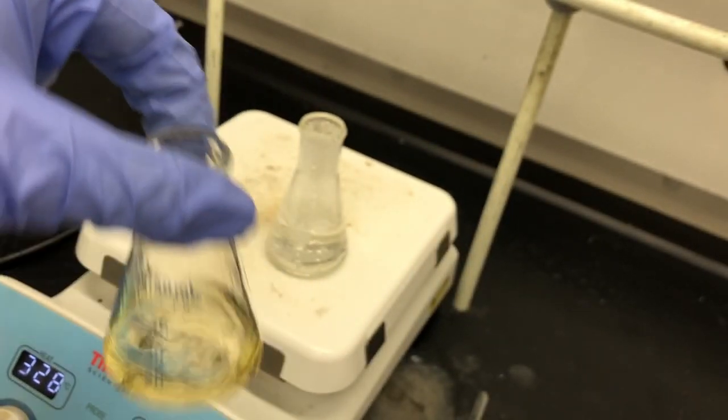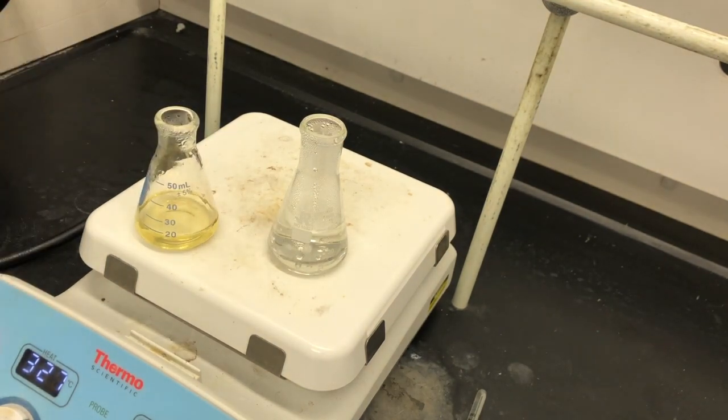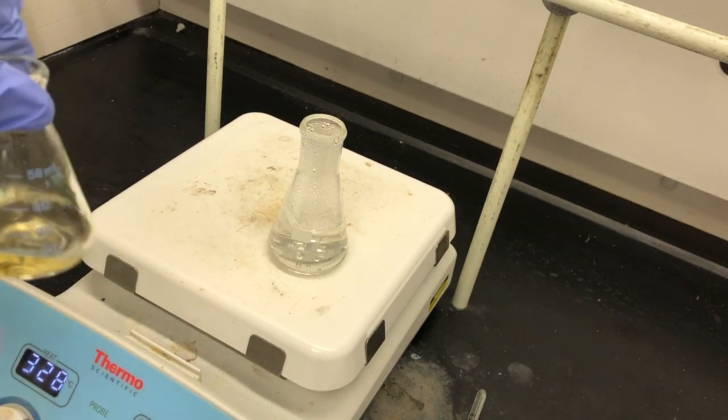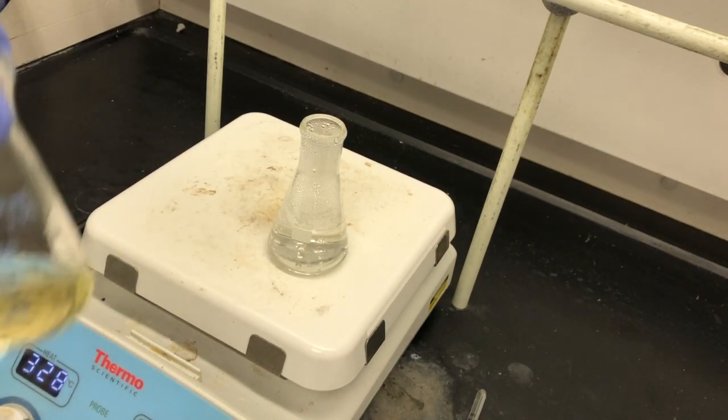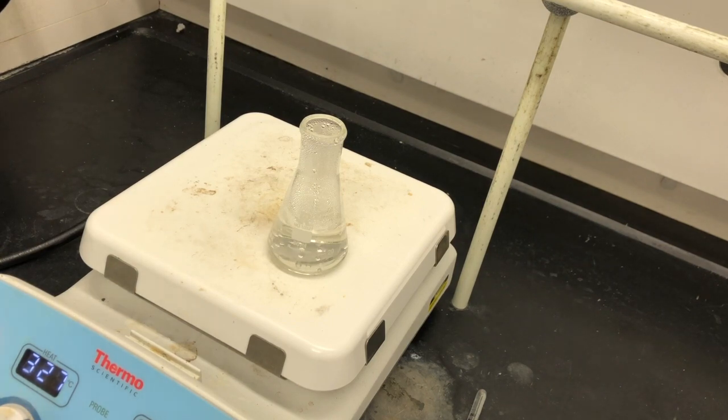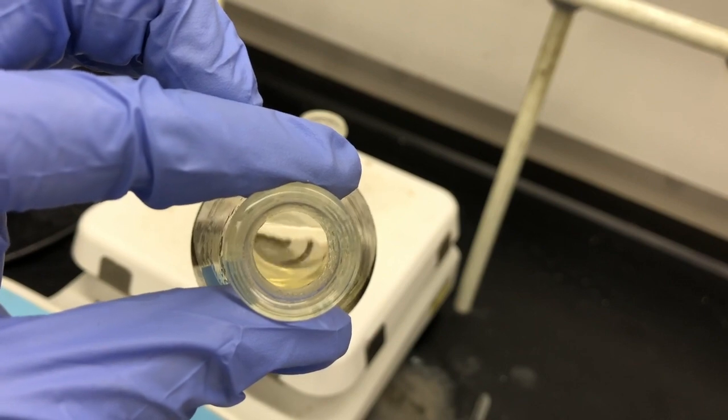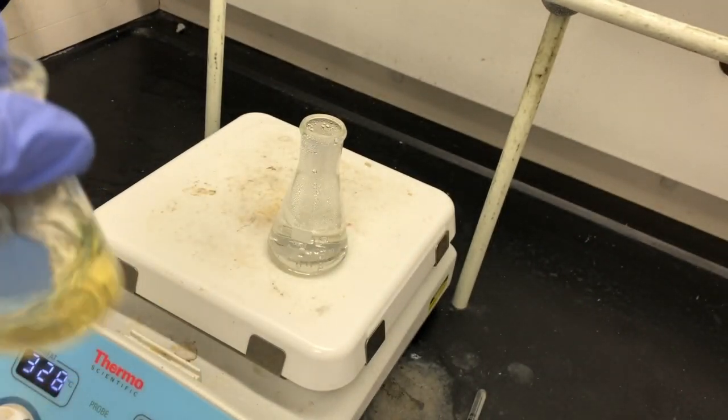So now the idea is that our compound of interest that we're trying to recrystallize which is NBS is soluble in the hot solvent and then it's insoluble as we allow it to cool slowly into room temperature and then being placed in ice. And that slow cooling that will take place is really important to allow the crystals to form without any impurities present.